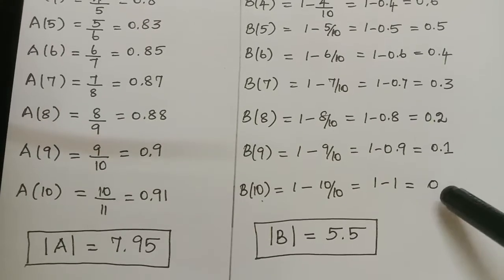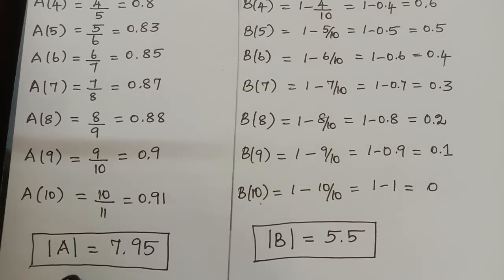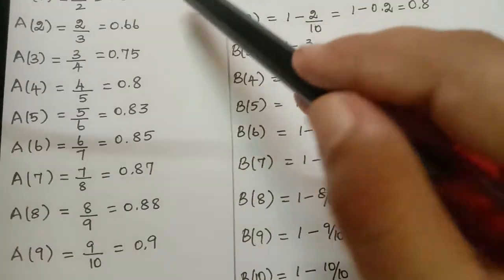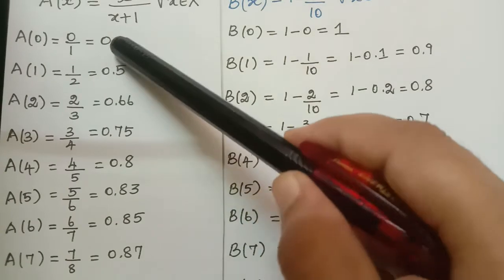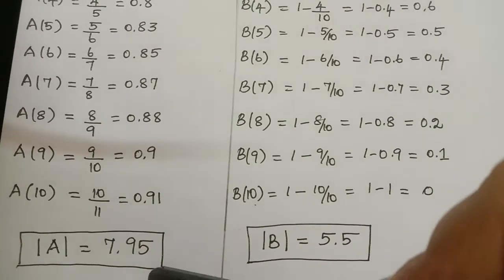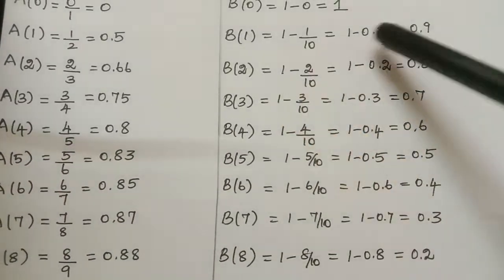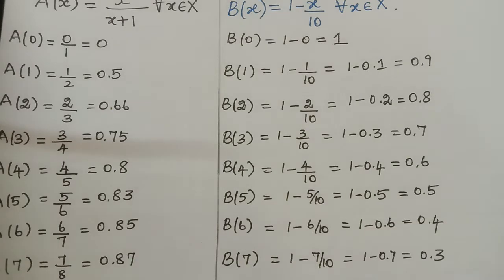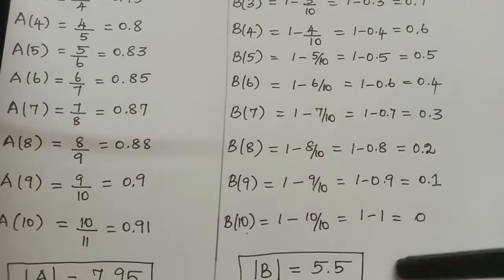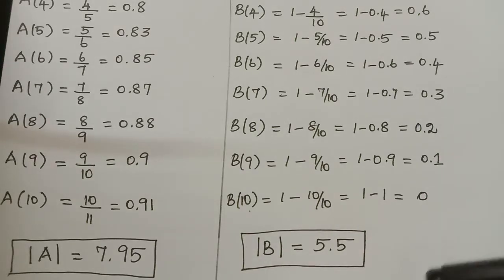To find the degree of subsethood using the formula, we need |A|, the scalar cardinality of fuzzy set A. The scalar cardinality |A| equals the sum of all membership grades, and we get |A| = 7.95. Similarly, to find the degree of subsethood of B in A we need |B|. Adding all membership grades of fuzzy set B gives the scalar cardinality |B| = 5.5.